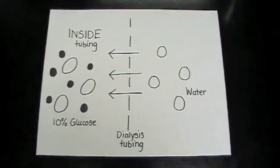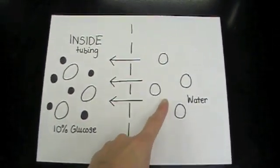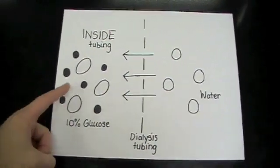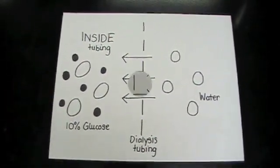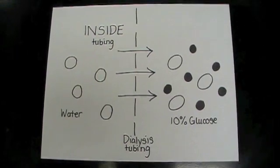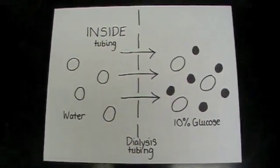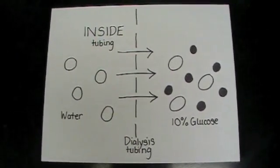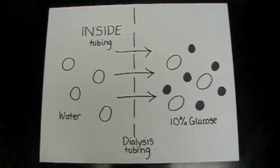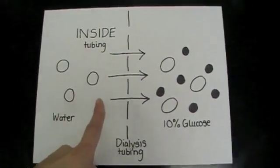We can also see this represented by a diagram where the water moves from an area of high water potential to an area of low water potential, or vice versa, as in the other tube, it moved from the high water potential on the inside of the tubing to the lower water potential on the outside of the tubing.